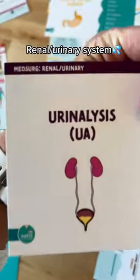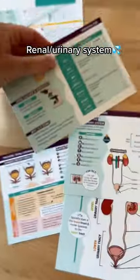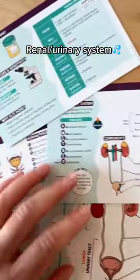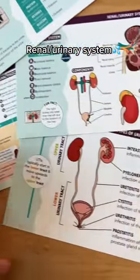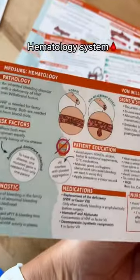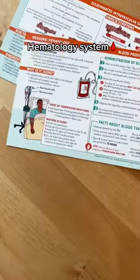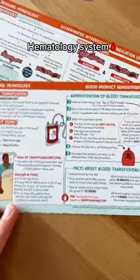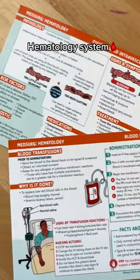Then we have our renal and urinary section, which covers the bladder and the kidneys. It also covers hematology — our hemo section — all about blood, platelets, white blood cells, and all those different diseases.